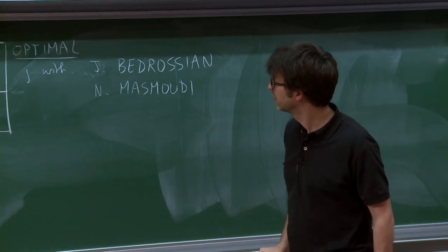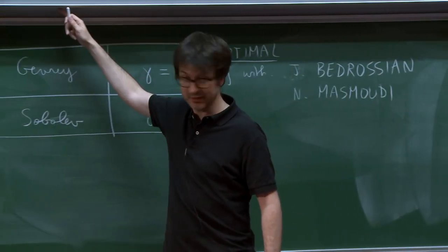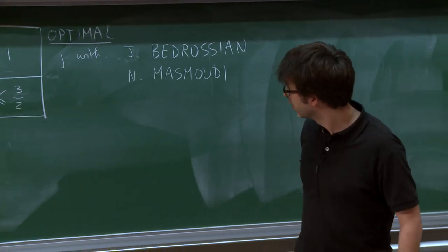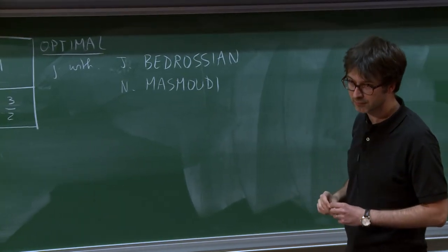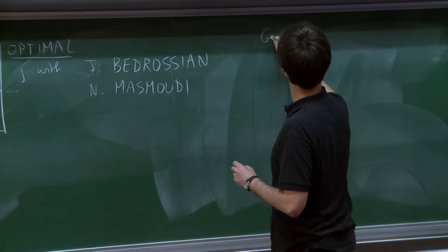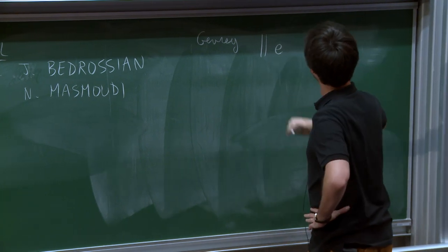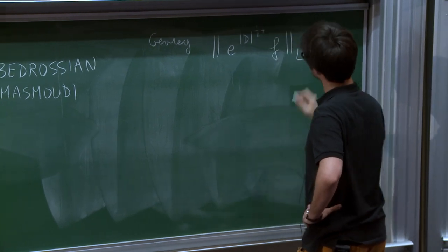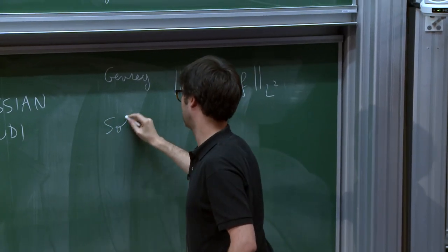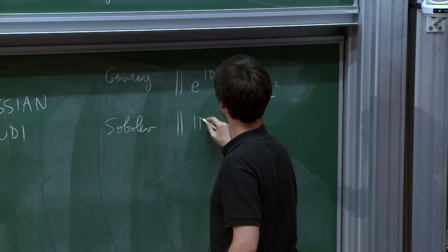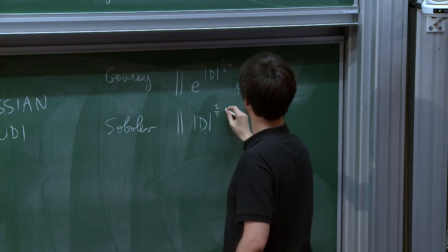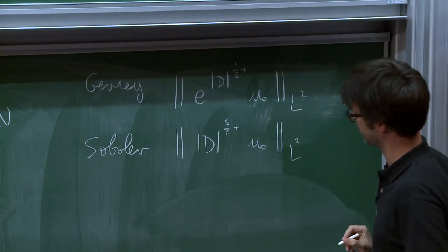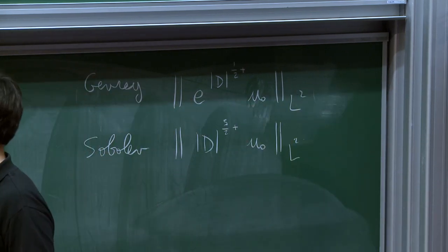Yeah, do you gain anything from analyticity? Yes. Oh, you mean if you go further to analytic? No, no, you would keep the same exponent. Does it depend on the Gevrey exponent? Yes. So here, what I mean by Gevrey is, say, e to the d to the 1 half plus f in L2. And what I mean by Sobolev is d to the 5, sorry, it should be u0, 5 half plus u0 in L2. Okay, so that's what we did with Jacob and Nader.